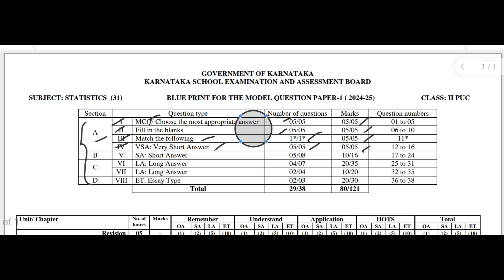All these mains belong to Part A. Next, Part B consists of the fifth main. In the fifth main you are going to get SA type questions, means short answer — two mark type questions. Here totally eight questions are there; out of eight you have to answer any five questions. Five into two equals ten marks.